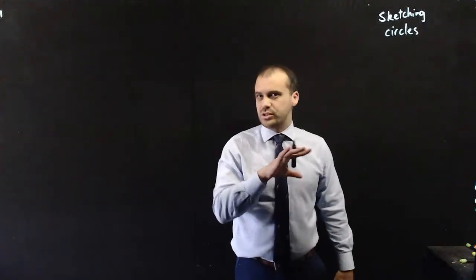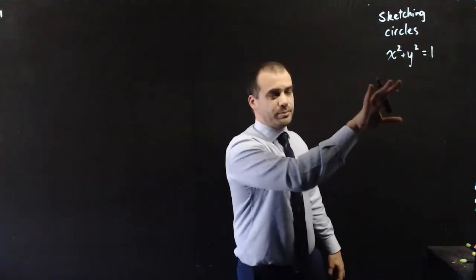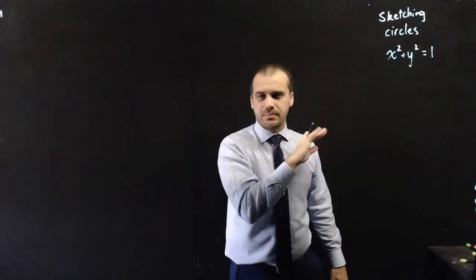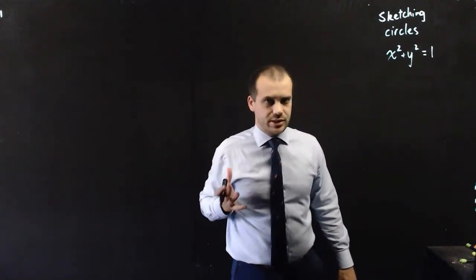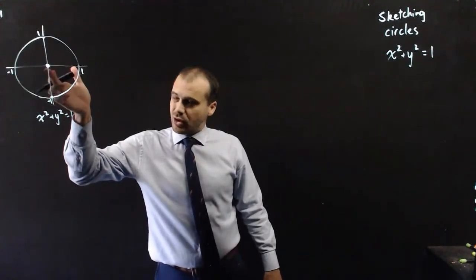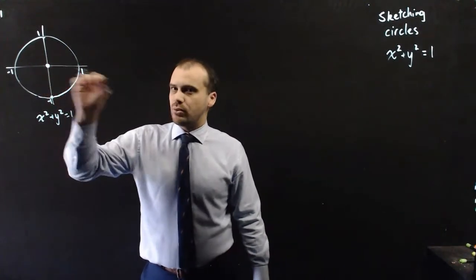So when it comes to sketching circles, you need to know two equations. First one is x squared plus y squared equals 1. It is the most basic circle, and it looks like this. It has a center at the origin and a radius of 1.